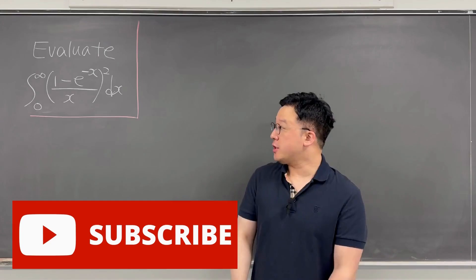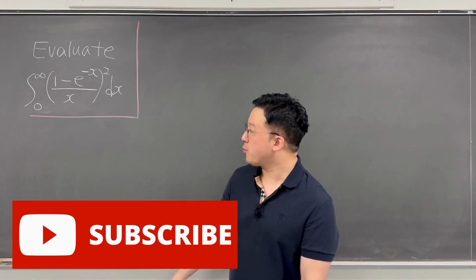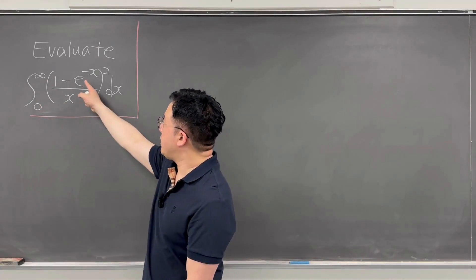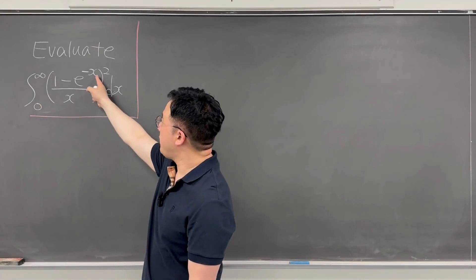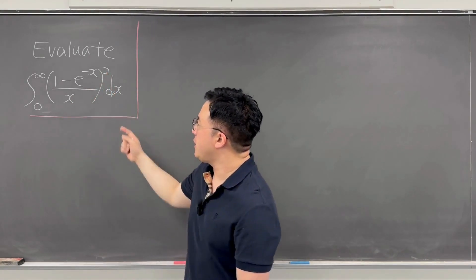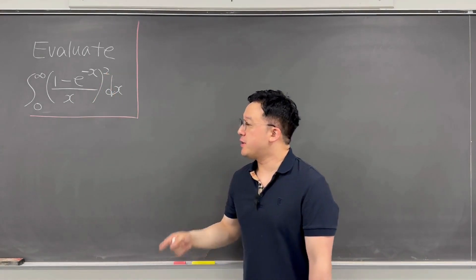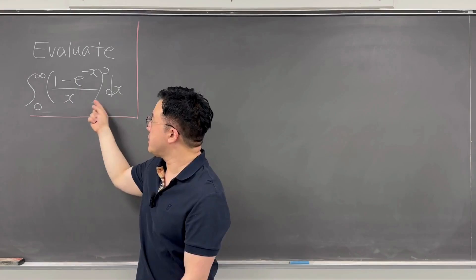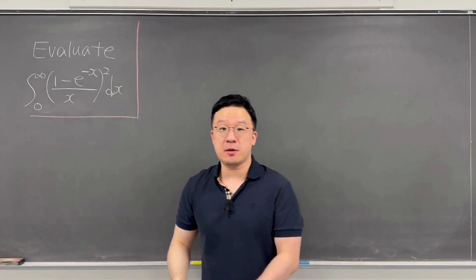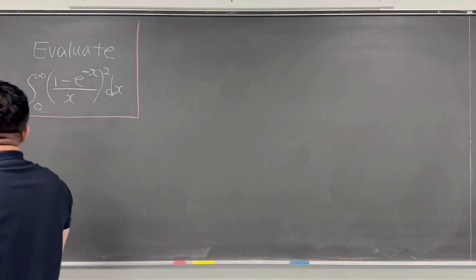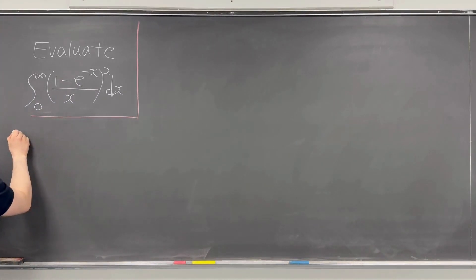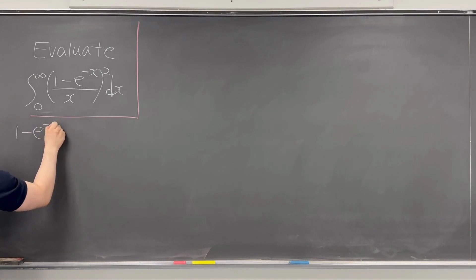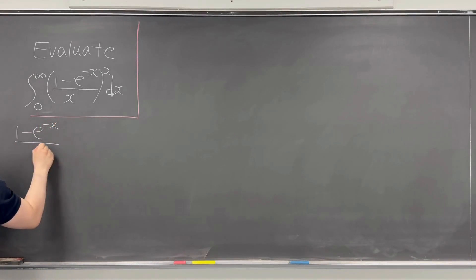Here's the question: evaluate this integral from zero to infinity of (1 minus e to the power of negative x) over x squared, dx. For this question, first we can rewrite the inside of the parenthesis using Big O notation. We note that (1 minus e to the power of negative x) over x can be rewritten using Big O.